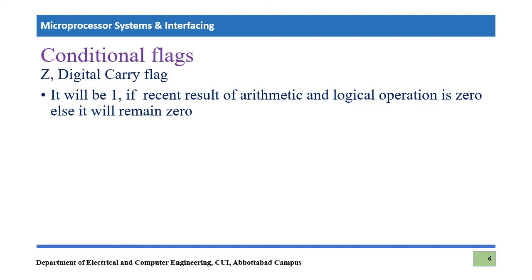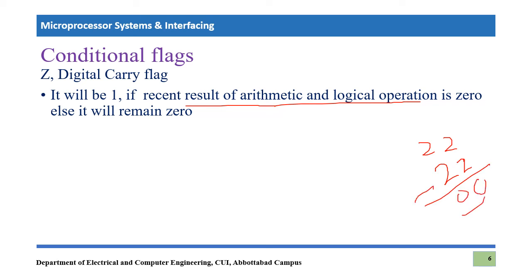The next flag is the zero flag (Z). It is very simple: whenever the last arithmetic or logical operation produces a result equal to 0, this flag becomes 1. For example, if we subtract 22h from 22h, the result is 00h — a complete zero result — so the zero flag becomes 1. Otherwise, the zero flag remains 0.